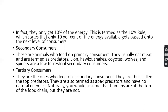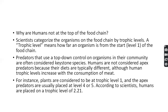Humans are said to be at the top of the food chain, but actually we occupy multiple trophic levels. We eat producers as well as consumers — sometimes primary consumers, sometimes secondary consumers, and sometimes only primary consumers. So our diet makes us occupy a different position in the food chain and food web, around trophic level 2.21.